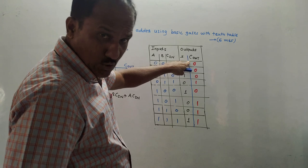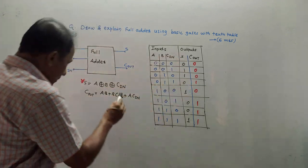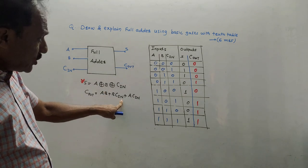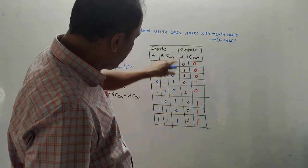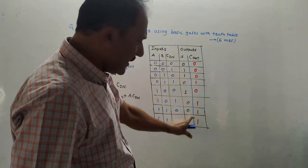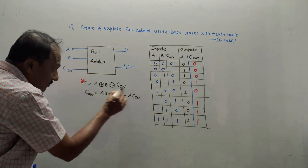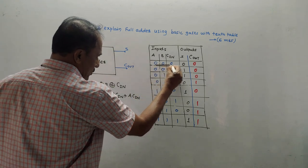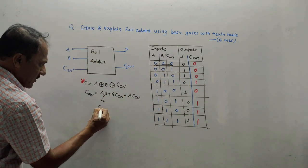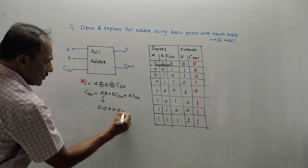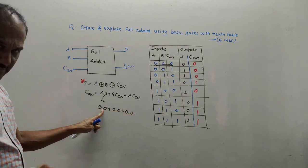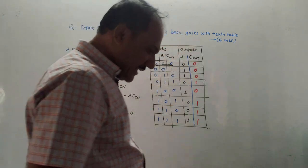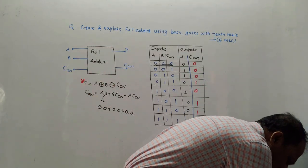To write the C-out values in the truth table, implement the equation: C-out = A·B + B·C-in + A·C-in. For 0-0-0: this gives 0·0 + 0·0 + 0·0 = 0. The dot means AND (multiplication) and plus means OR. Likewise all the other C-out values are generated by applying this equation to each input combination.